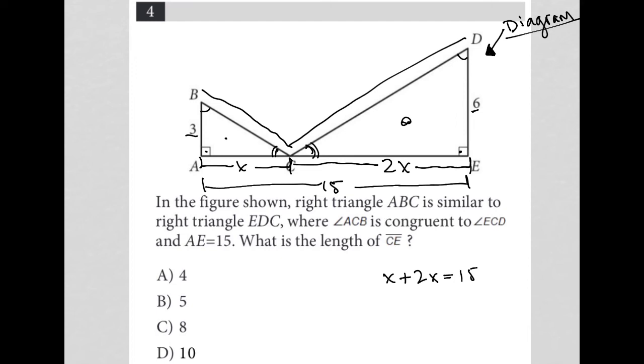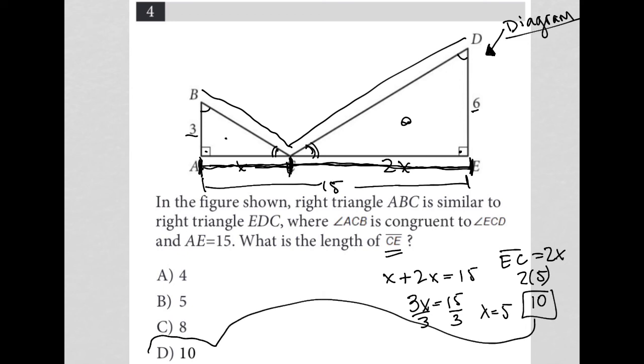When I solve this equation, I get 3X equals 15, divide by 3, and I get X equals 5. But let's not forget, X is the AC length, this length here for the small right triangle. The question wants us to figure out the CE length, which is this here, which is the 2X part of this line. Therefore EC, or CE, is equal to 2X. 2X is 2 times 5, which equals 10, and therefore our answer here is choice D.